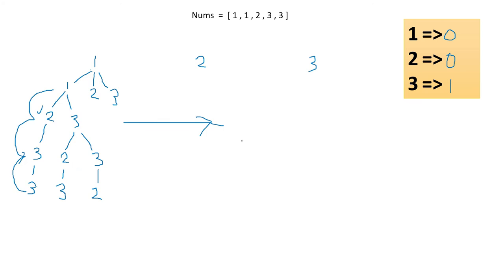So the key idea is: use a map and decrease counts as we go deeper in the DFS, and increase counts back when backtracking so those numbers become available again. This generates all possible permutations correctly even with duplicates.